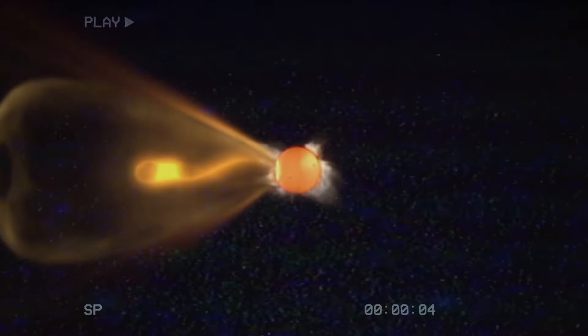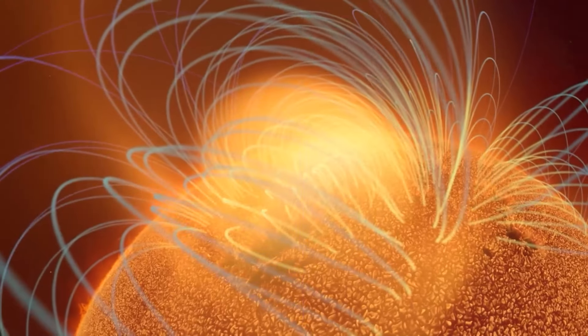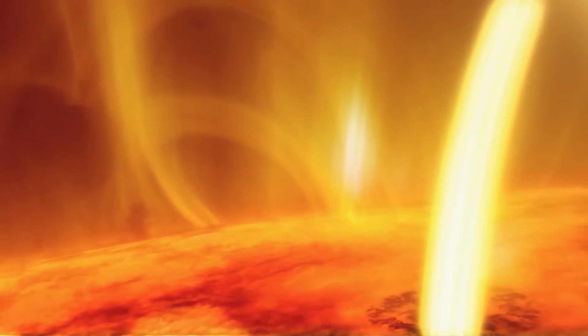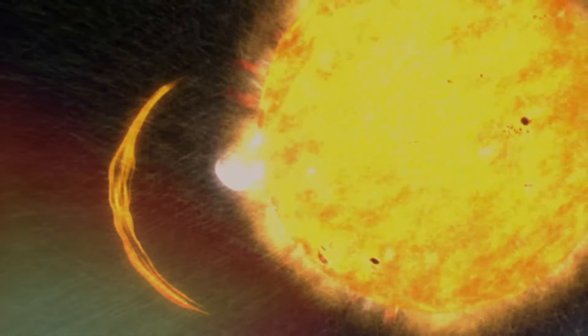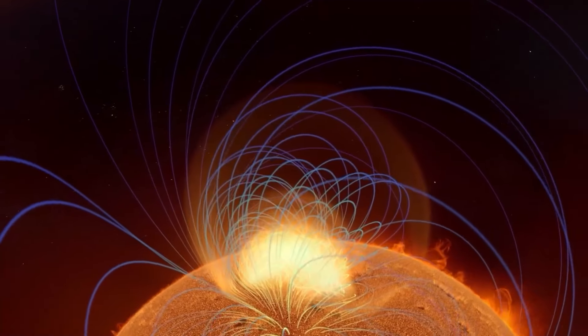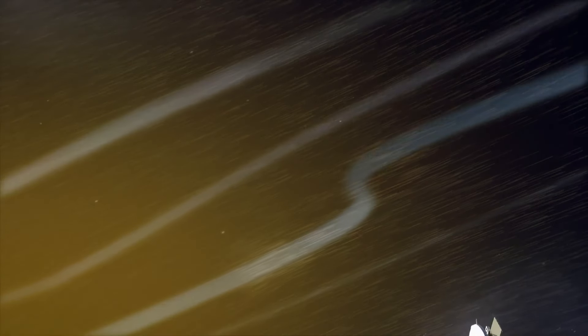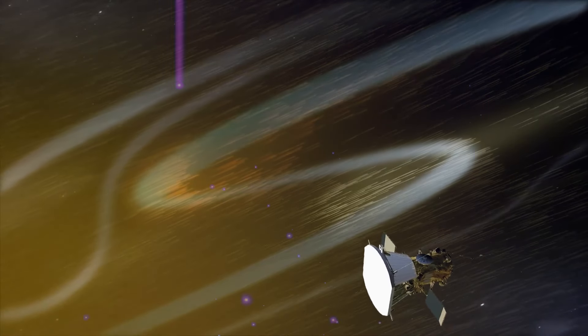Solar flares are classified based on their X-ray brightness in the wavelength range of 1-8 angstroms. The classification system includes A, B, C, M and X classes, with each class having a tenfold increase in energy output. For example, an X-1 flare is 10 times more intense than an M-1 flare and 100 times more intense than a C-1 flare. Recent solar activity has included several X-class flares, such as the X-1.4 flare on June 1, 2024. These flares release vast amounts of energy equivalent to millions of hydrogen bombs. The intense radiation from these flares can disrupt high-frequency radio communications and GPS signals, impacting aviation, maritime operations and military activity.